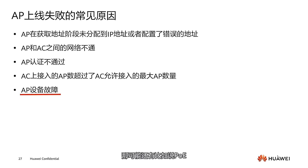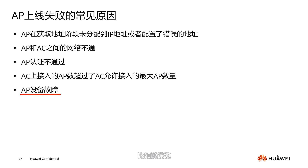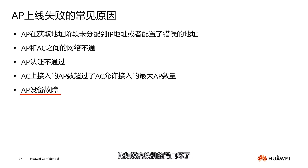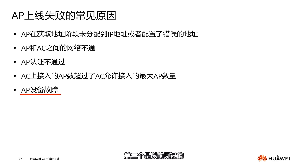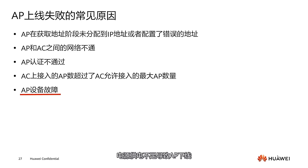The last reason is an AP fault. When there is a problem with the AP itself, it could also be a PoE switch issue — for example, a broken cable, a failed port on the switch, or a classic power supply issue where insufficient power causes the AP to go offline.